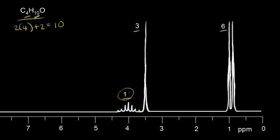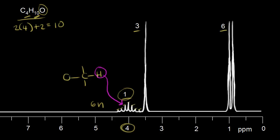Focusing on the one-proton signal — drawing that proton on a carbon. Counting the peaks, I see seven, so seven minus one equals six neighboring protons. This is the magenta proton. The chemical shift is around four parts per million, which is expected for a proton on a carbon bonded to an electronegative atom. We have an oxygen, so I'll put the oxygen bonded to that carbon — the oxygen withdraws electron density, deshielding the proton and giving it a higher chemical shift.